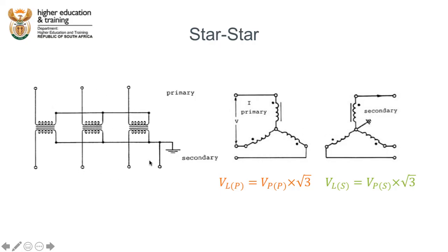This is what the star configuration would look like diagrammatically. On the primary side, all three coils are connected in a star formation — every coil connected together at one central point. The same thing happens on the secondary side: the end of every coil is connected to a single point. Because it is in a star configuration, we have the ability to connect a neutral to this single star connection point, and we are therefore also able to connect this to ground.